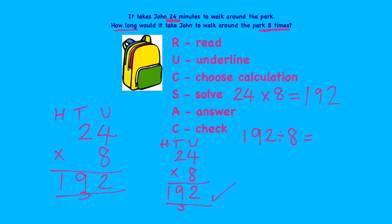Another important thing: when you check, make sure you also re-read the question, because you can redo the calculation correctly but it might not be what the question was asking. Just recap — John, 24 minutes, round the park 8 times. Yes, I do need to do 24 times 8.